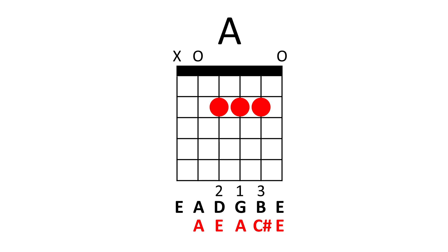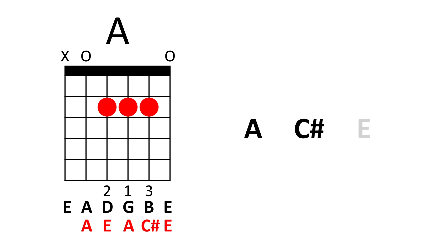Now, on the fifth string, we have A, followed by E, A, C-sharp, and E. So essentially, we're just playing three notes, A, C-sharp, and E, just that some of the notes are doubled up, mainly the A note on the fifth string and third string, and the E note on the fourth string and the first string.